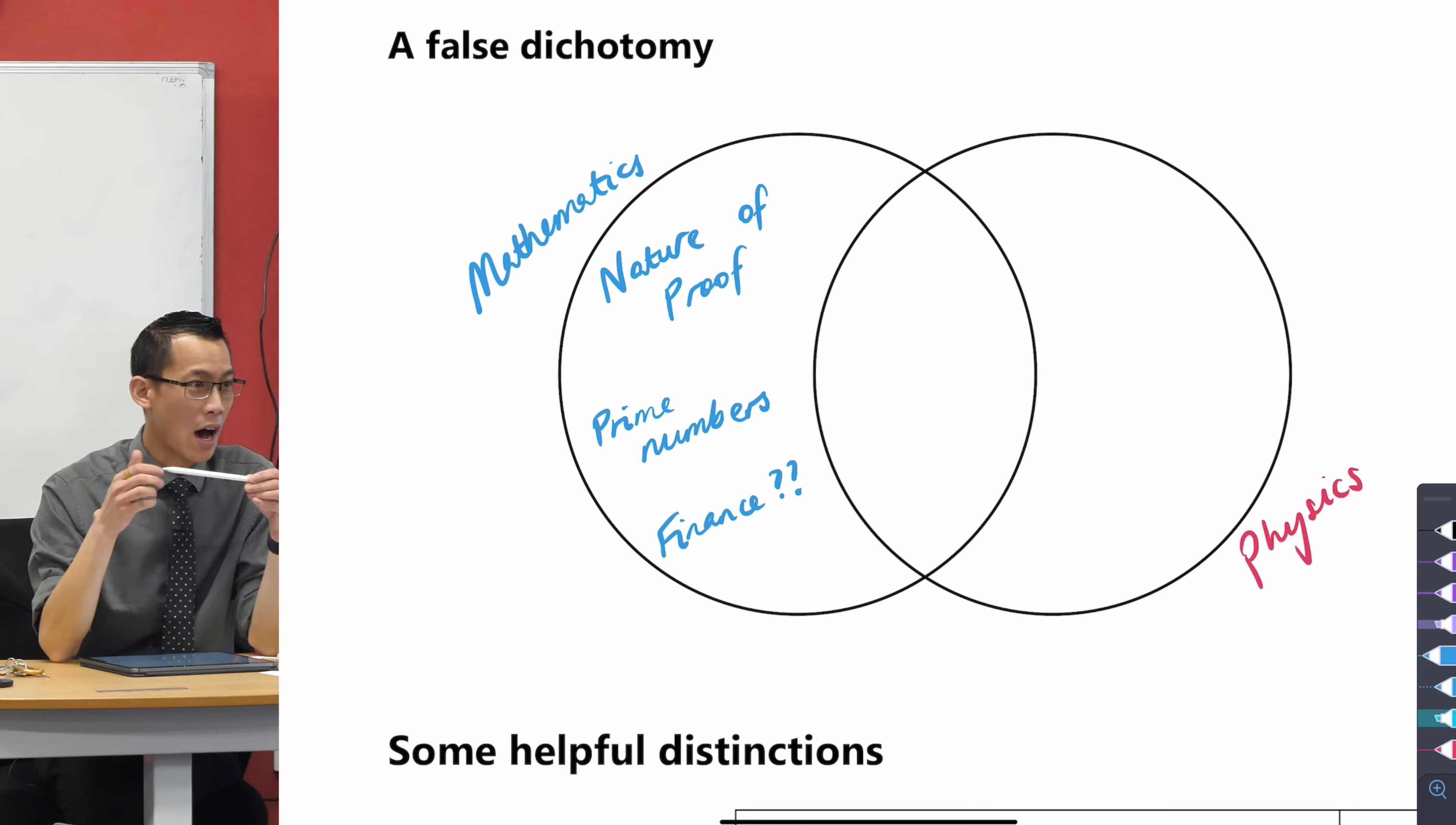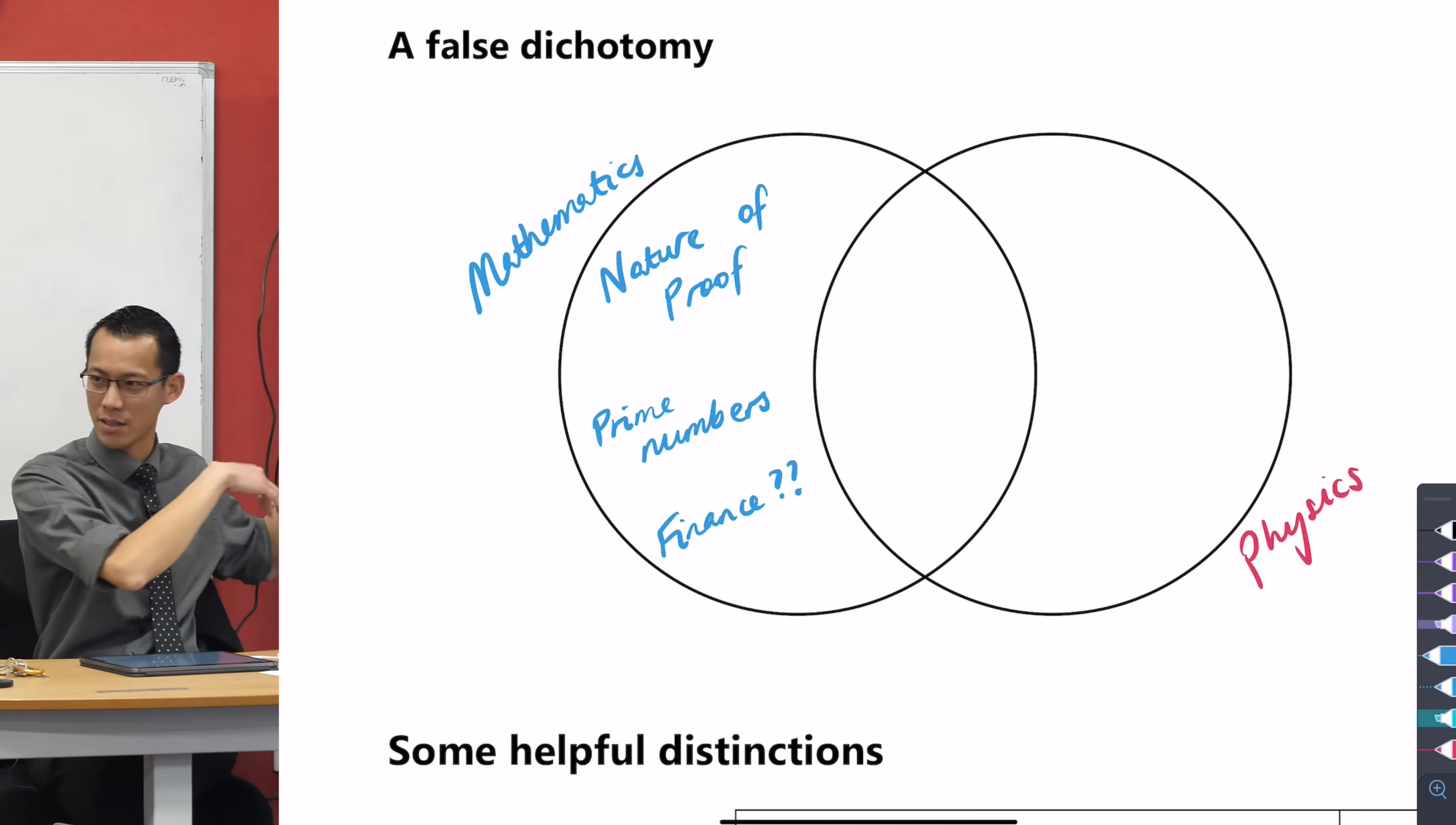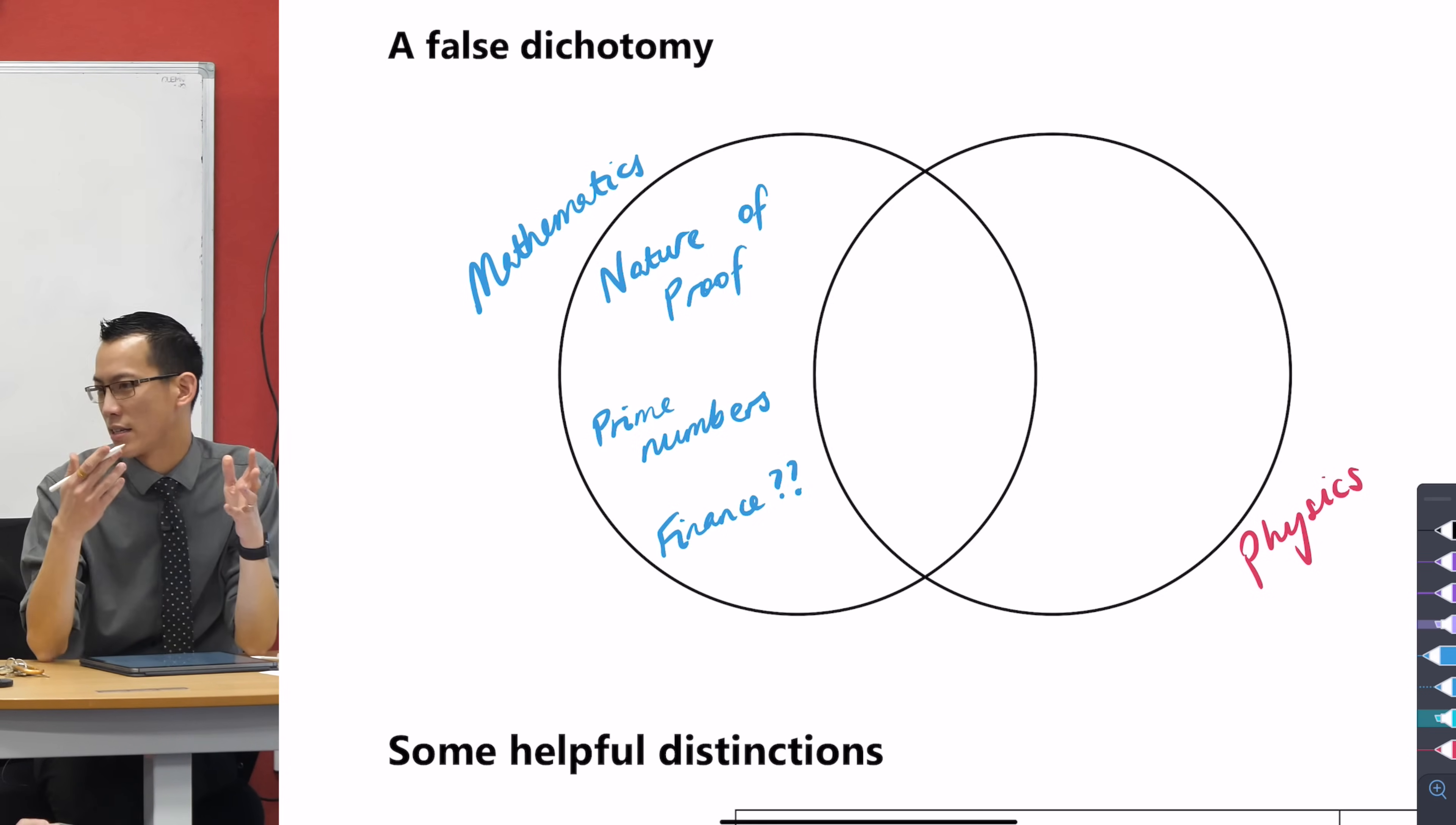Say something like statistics. Well, chemistry is highly statistical. Our understanding of how chemical reactions work, and of course that's actually all driven by physics. You see why I say this is a false dichotomy? But still we can say there are some things we're interested in maths that physics is not.